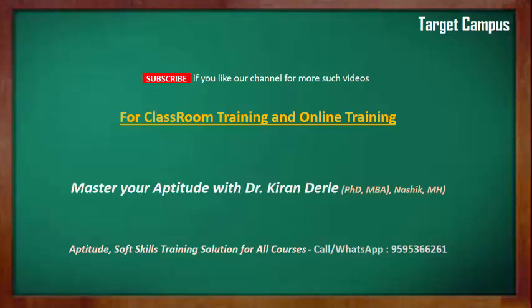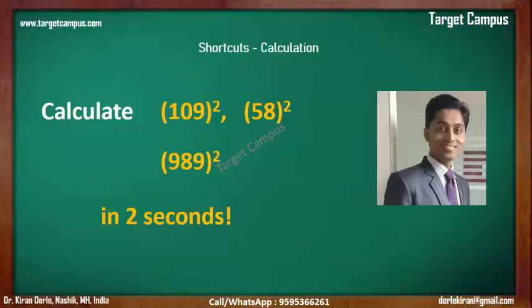Welcome to the video. This is Dr. Kiran here. Today we have shortcuts — squares of numbers which are close to 100, squares of any two-digit number, and squares of numbers close to 1000. We have very quick techniques for all of these. Let's move forward fast.